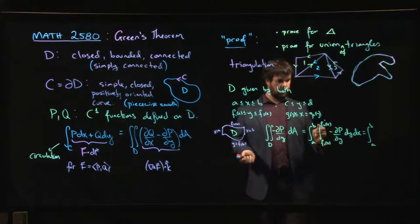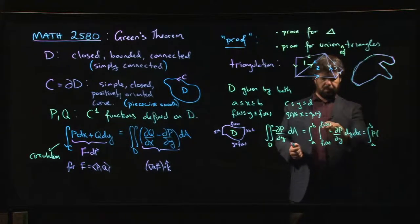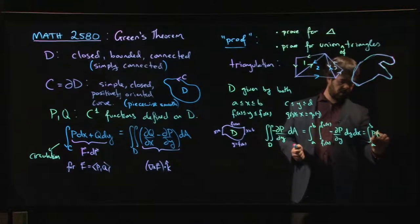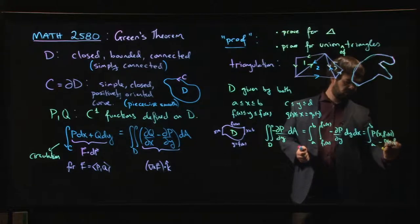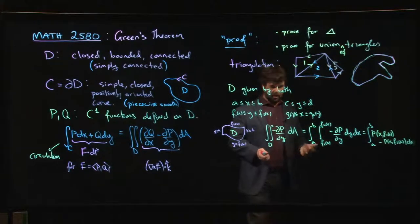And so what you're going to get is you're going to get p at, so we're going to plug in these for y, right? And with the minus sign there, we do the lower limit first. So it's going to be p at (x, f1 of x) minus p at (x, f2 of x) integrate with respect to x, right? Okay.